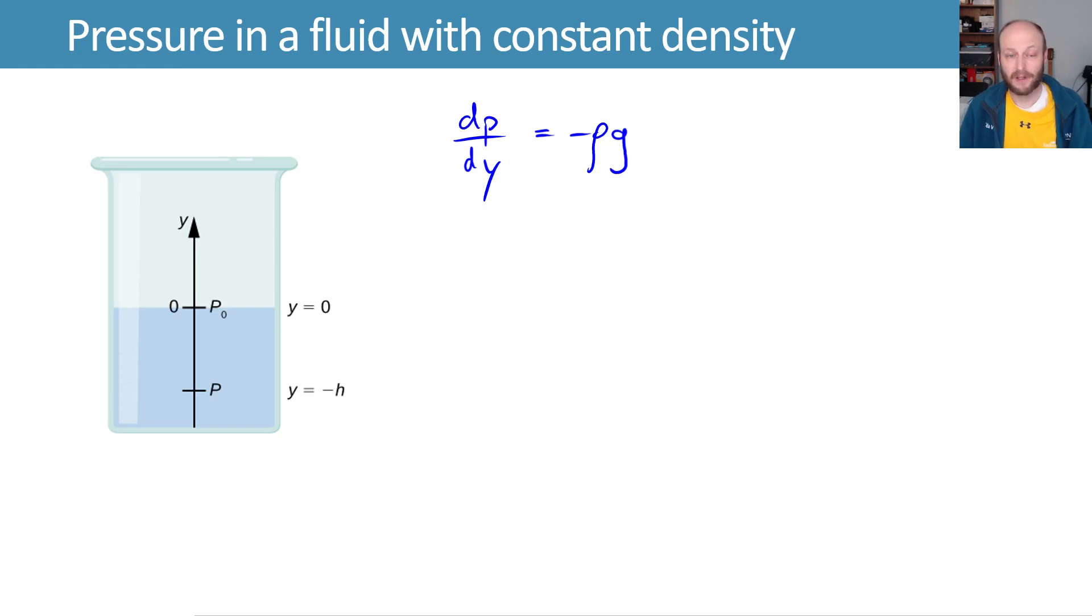Let's consider pressure in a fluid with constant density and use this relationship here to try to determine how that pressure varies. We've seen this before. We expect that we'll end up with ρgh. Let's verify that we can do that.